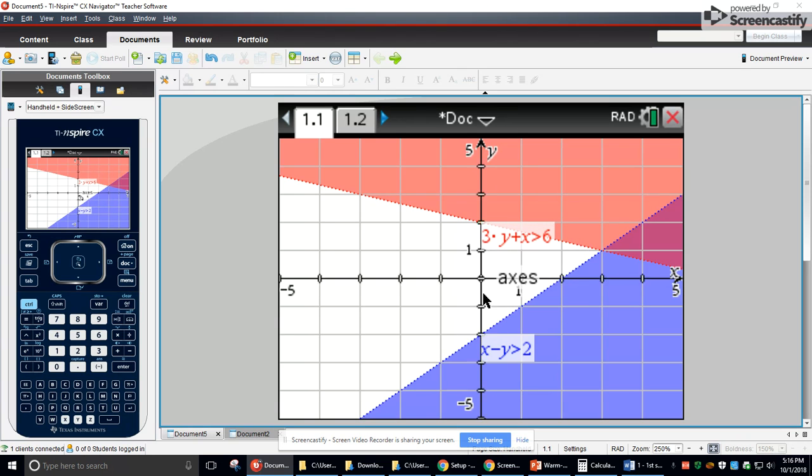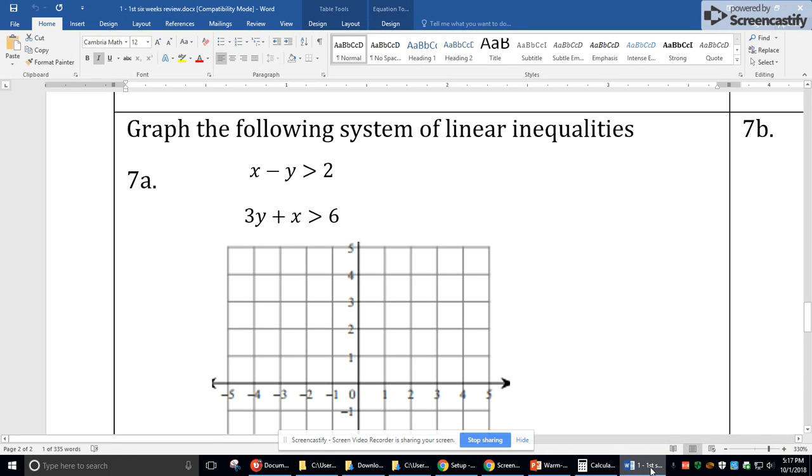So this one has a positive slope of up 1 over 1. This one has a negative slope of negative 1 over 3. So I would just try and copy that graph the best I could.